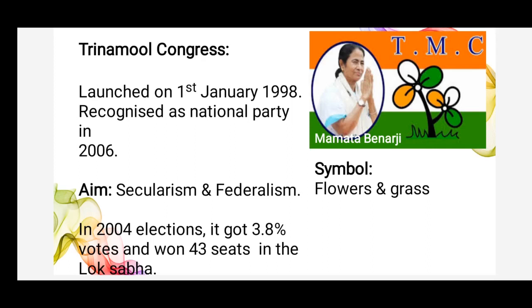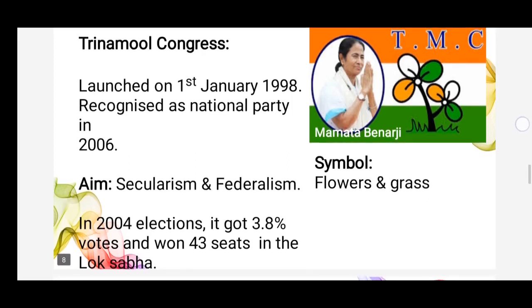This party's main aim is commitment to secularism and federalism. It has strong power in West Bengal and has been in power there since 2011. It also has a presence in Arunachal Pradesh, Manipur, Tripura, etc. In the general elections held in 2004, it secured 3.84% of votes in the Lok Sabha and won 34 seats, making it the 4th largest party in the Lok Sabha.